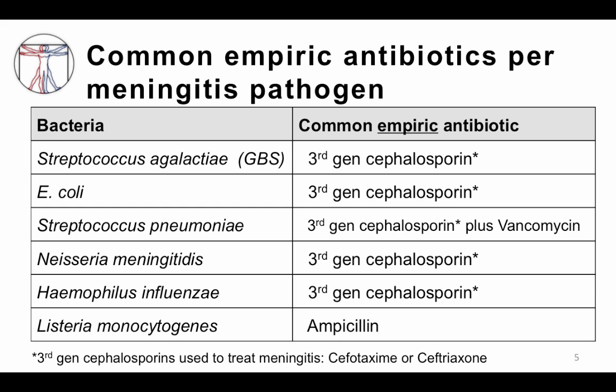This table shows what the common empiric antibiotics are for each bacterial meningitis pathogen. The third generation cephalosporins — most commonly cefotaxime or ceftriaxone — are the ones that are used, and they work well for group B strep, E. coli, strep pneumo, Neisseria meningitidis, and H. influenzae.